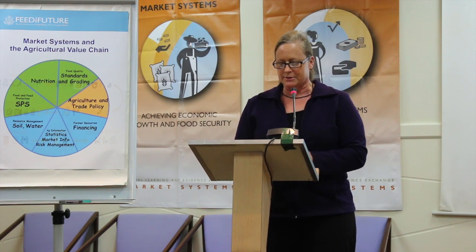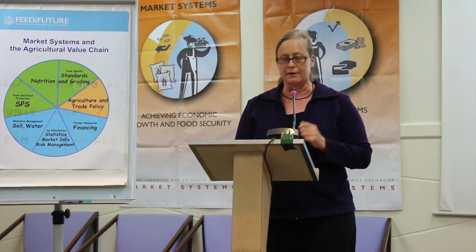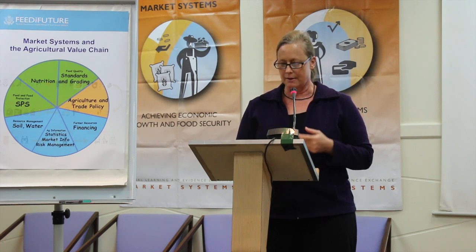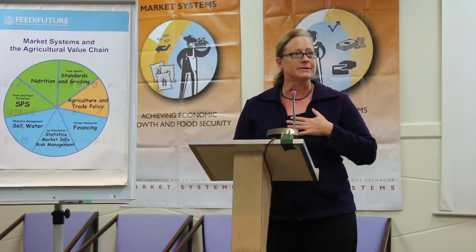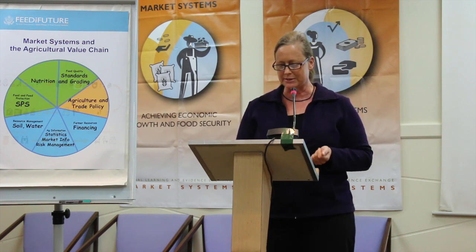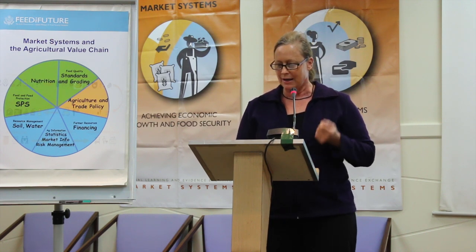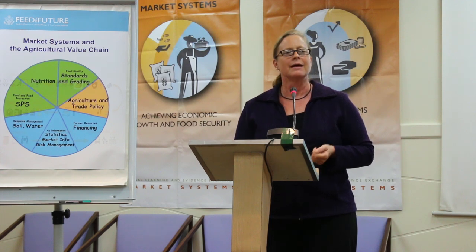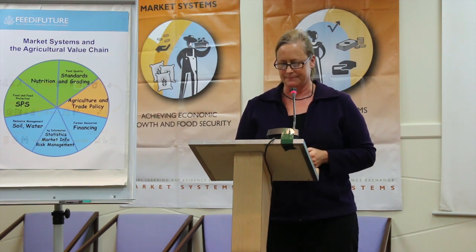Examples of market systems impacting food security include, but are not limited to, SPS systems, agricultural research and extension systems, agricultural marketing information and statistical analysis.